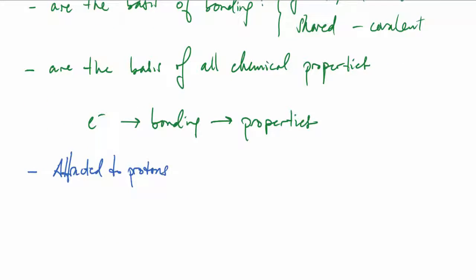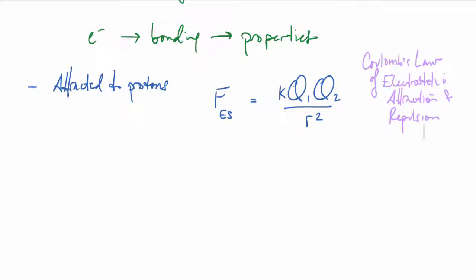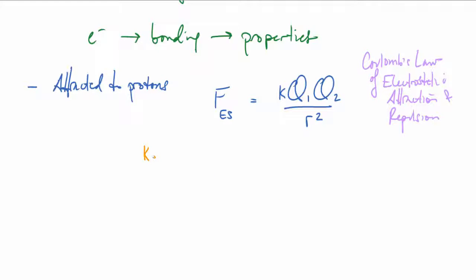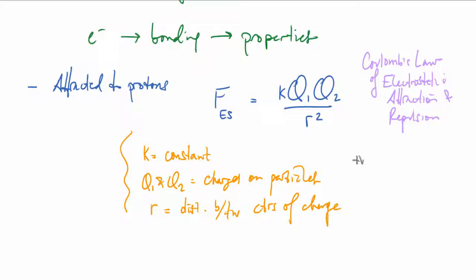We know that electrons are attracted to protons, and here we have Coulomb's law of electrostatic attraction which is k*q1*q2 over r squared, where q1 and q2 are the charges of the items in question, in this case an electron and a proton, and r is the distance between their centers of charge. If the force comes out positively, that will be a repulsive force, and if it comes out negatively, that'll be an attractive force.